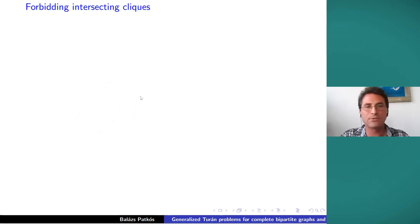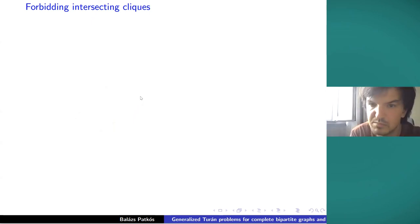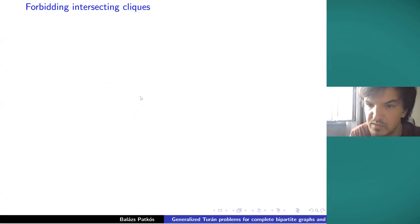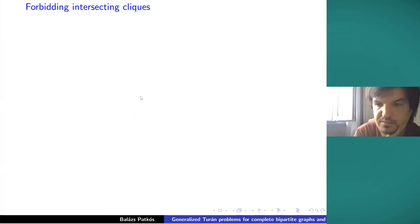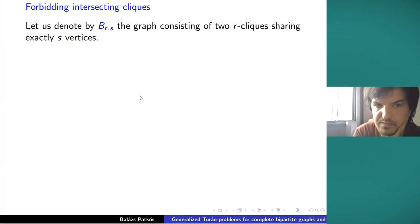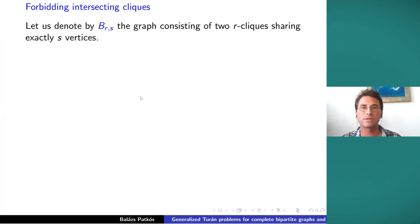That completes the first part. Now about intersecting cliques: let B_{r,s} denote the graph consisting of two cliques of size r sharing exactly s vertices. This is of interest because the Ruzsa-Szemerédi theorem can be formulated this way: the maximum number of edges in an n-vertex graph where every edge is in exactly one triangle is little-o of n squared but at least n^{2-o(1)}. This corresponds to forbidding B_{3,2}, since two triangles should not share an edge.